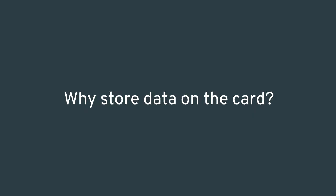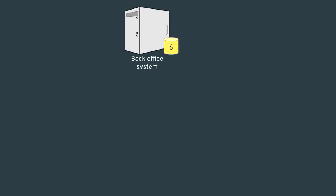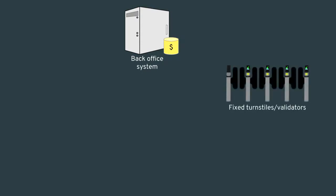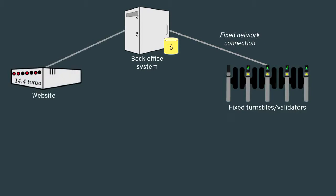Why do operators need to store data on the card? In a public transit ticketing system, there's a back-office system with a database of all cards, their balances, and a transaction ledger. There are fixed validators on platforms and wharves with a fixed network connection to the back-office. You might also have a website for online top-up and some vending machines. In a traditional design, you connect all readers to the back-office and process every transaction online — the back-office is your source of truth.